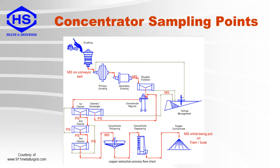Here is an example of some sampling points in and around a concentrator circuit. MS stands for metallurgical samplers and PS for process control samplers. In this case, there are solid samplers after the crushing system, or feed to the grinding circuit, and where the end product is loaded onto a truck, train, or boat. Slurry samplers are placed in and around the flotation circuit, where metallurgical samplers are for feed, concentrate, and tails, and process control samplers are for intermediate sampling points.